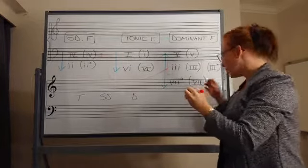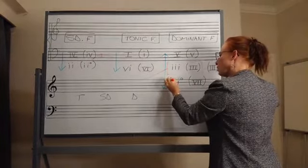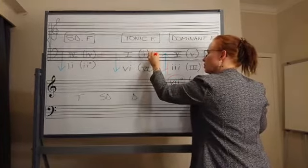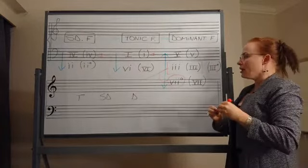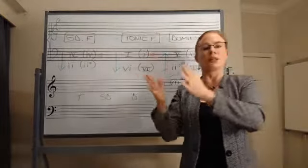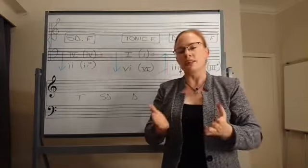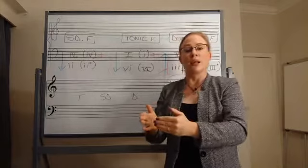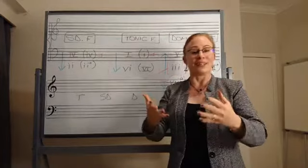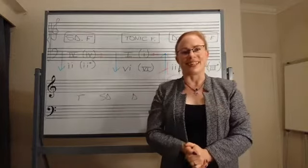One last point about chord progression: chord 7 prefers to go to chord 1. It can move freely within the dominant function, but when it moves outside of it to the tonic function, it prefers to go to chord 1. Here and there you might see it go to chord 6, but to keep it simple, go to chord 1. And that's basically your chord progression in a nutshell.